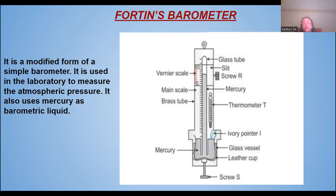Now we come to the discussion of the Fortin's barometer. What is a Fortin's barometer? It is a modified form of a simple barometer. It is used in the laboratory to measure the atmospheric pressure. The similarity between the Fortin's barometer and the simple barometer is that both use mercury as the barometric liquid. It also measures the atmospheric pressure like the simple barometer, so it is a modified barometer.